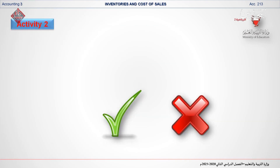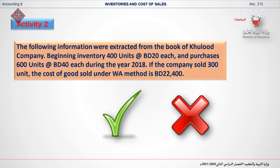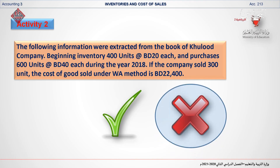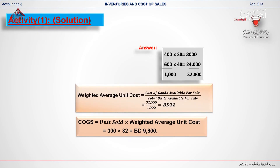Here is a true or false question. The following information was extracted from the books of Hulud company: beginning inventory of 400 units at 20 BD each and purchases of 600 units at 40 BD each during 2018. If the company sold 300 units, the cost of goods sold under the weighted average method should be 22,400 BD. Do the calculation yourself and check your answer. This statement is false — the cost of goods sold should be 9,600 BD.